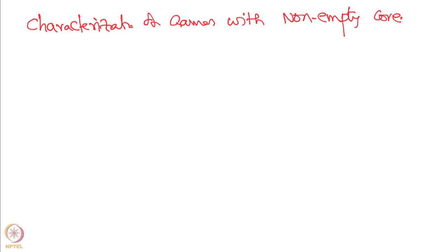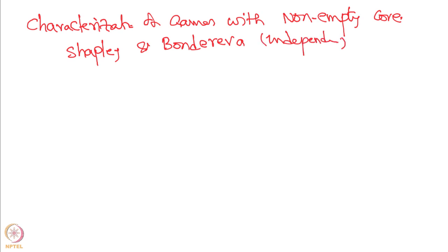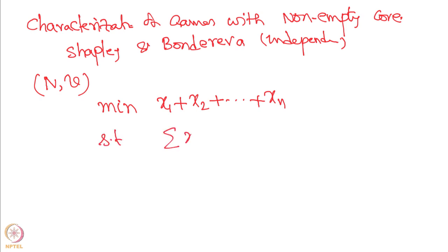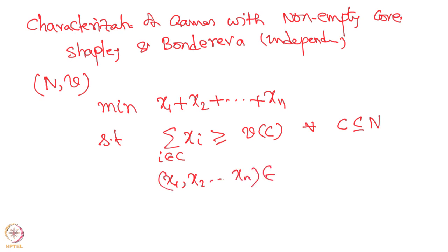This characterization is due to Shapley and Bondreva independently. We consider the following linear programming problem. Given a transferable utility game (N, v), look at: minimize x₁ + x₂ + ... + xₙ subject to the constraint that the summation of xᵢ for i in C is greater than or equal to v(C), for every subset C of N, and x is in Rⁿ. This is a set of linear inequalities and we are minimizing a linear function — this is a linear program.